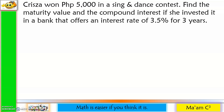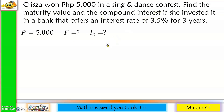Next example: Krisa won 5,000 pesos in a sing and dance contest. Find the maturity value and the compound interest if she invested it in a bank that offers an interest rate of 3.5% for 3 years. Let us identify what we have here. 5,000 is our principal amount, which is P. Maturity value is unknown, as well as the compound interest. The interest rate is 3.5%, so R is 0.035. And 3 years is our time T.